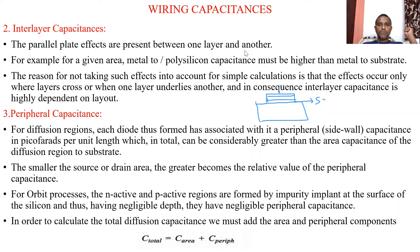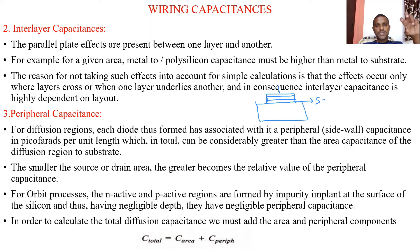The parallel plate effects are present between one layer and another layer. For a given area, metal-to-polysilicon capacitance must be higher than metal-to-substrate capacitance. Metal-to-substrate is nothing but gate-to-channel capacitance, but metal-to-polysilicon is higher than that. So interlayer capacitances also contribute to the overall wiring capacitances.